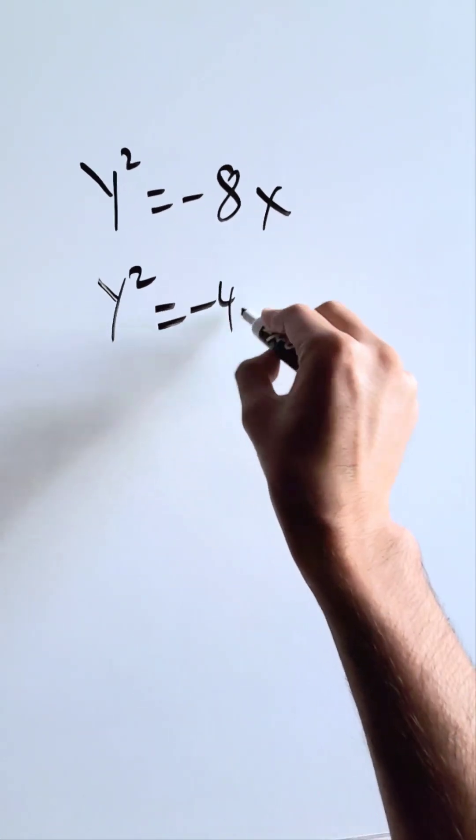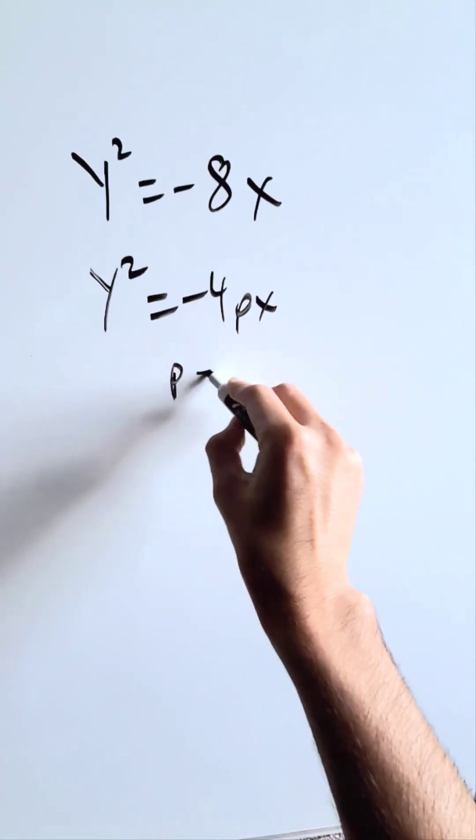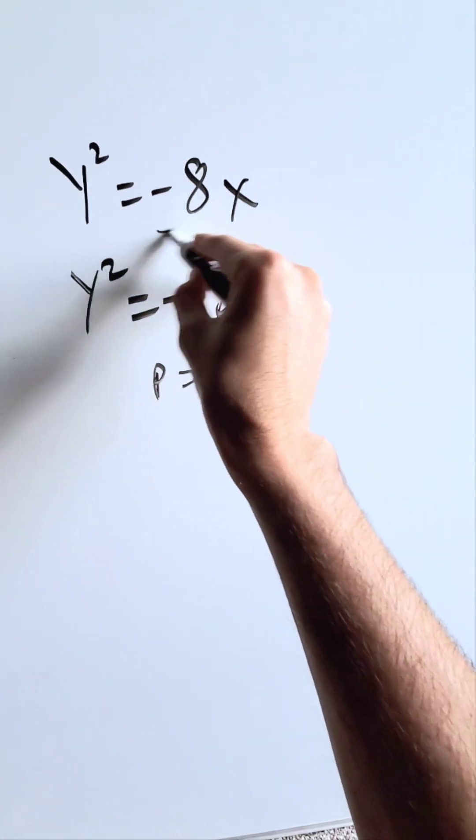I'm looking at a form y square is equal to minus 4px. You know p here must be equal to 2. Minus 4 times 2 will give you this minus 8.